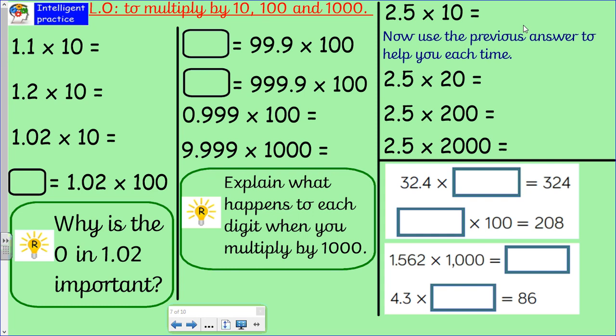So, 2.5 times 10. And then, whatever your answer is to this, you're going to use some connective thinking to link your answer here to here. I want you to think about what you have to do to this 10 here to get to 20. So, connective thinking facts. When you've got your answer to this one, use it to answer this one.